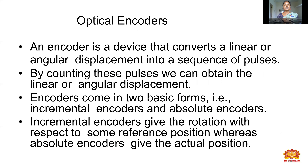Next is the optical encoder. An encoder is a device that converts a linear or angular displacement into a sequence of pulses. By counting these pulses, we can obtain the linear or angular displacement. Encoders come in two basic forms: one is an incremental encoder, and another is the absolute encoder. Incremental encoders give rotation with respect to some reference position, whereas absolute encoders give an actual position.